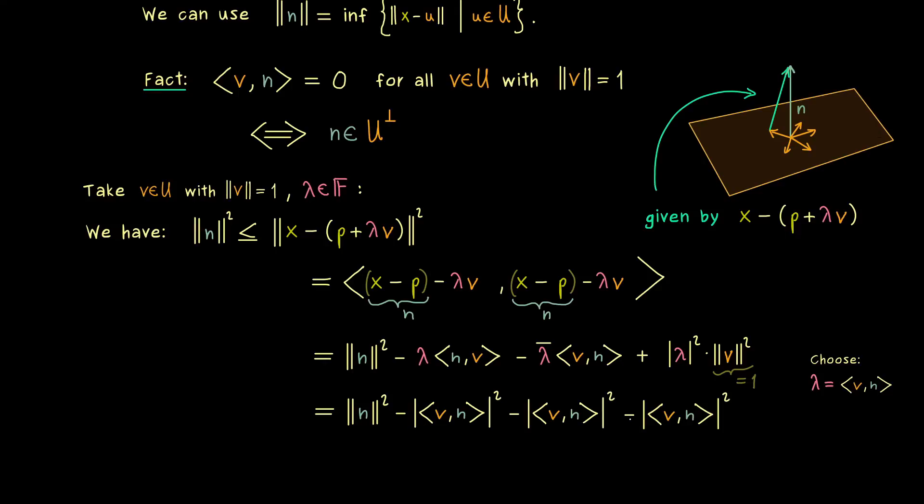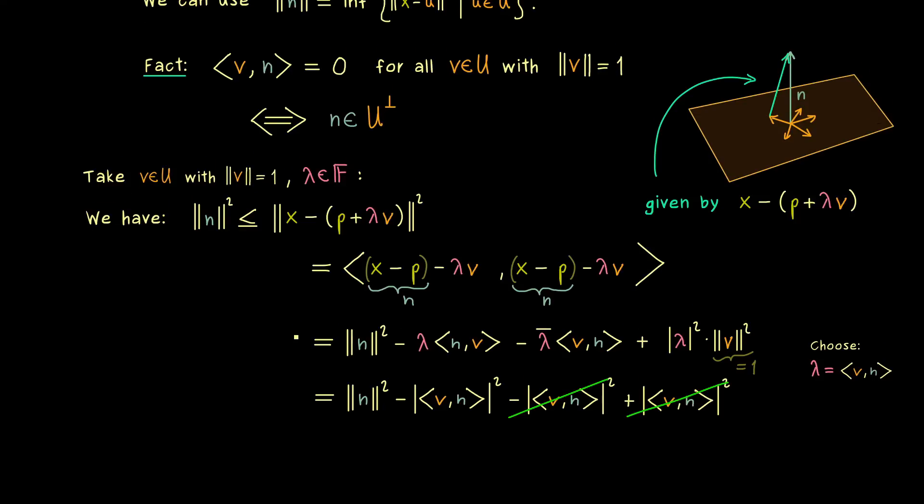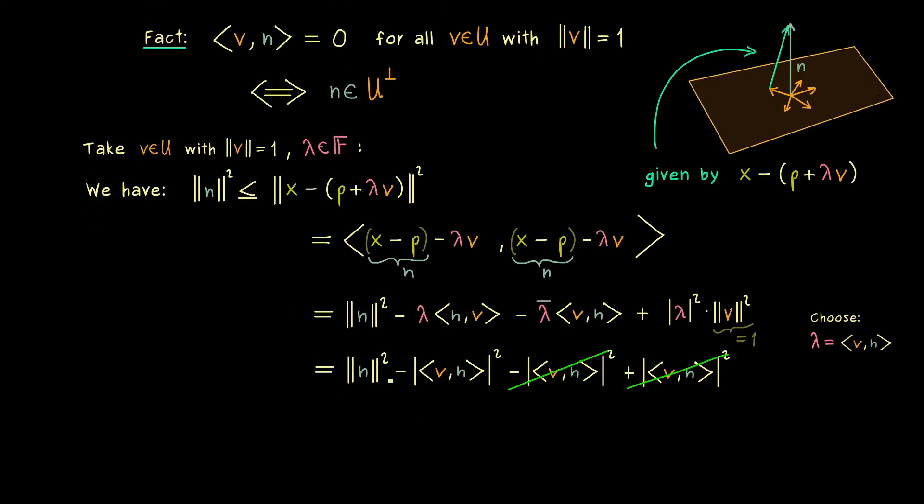Hence the other two terms are exactly the same, just the last one has a plus sign. Which actually means, we can just forget about them all together. However, on the other hand you should also see, that we can simply subtract the first term on both sides. And then what we get is an inequality for a non-positive number.